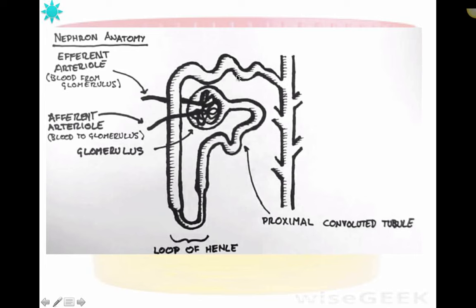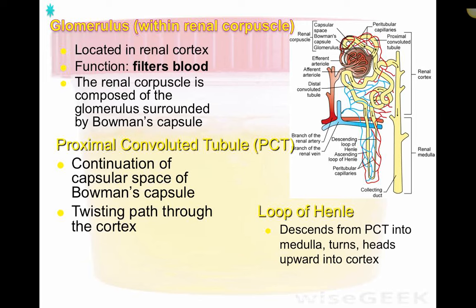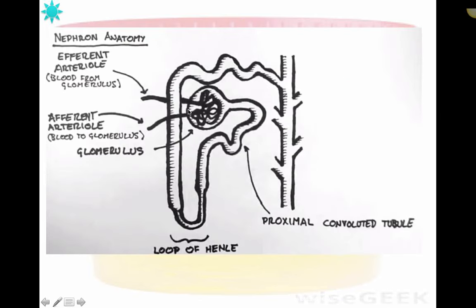Looking at a simple diagram of the nephron: the glomerulus receives blood from two arterioles. Arterioles are branches of arteries that have become progressively smaller. The afferent arteriole supplies blood to the glomerulus — bringing dirty blood from the body to be filtered into urine.